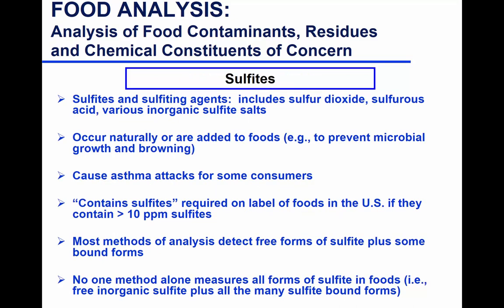Sulfites are one of the main residues of concern. They are either present naturally or added — we talked about adding them as antimicrobial agents, for preservation, or for anti-browning because they're reducing agents. They can be added or naturally present, like in wine. Some people have sensitivity to sulfites and can have asthma-like reactions, and therefore there is regulation that if a product has more than 10 ppm sulfites, it must be stated on the label.